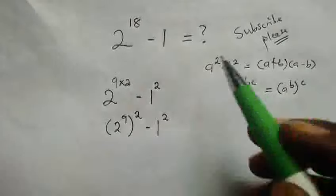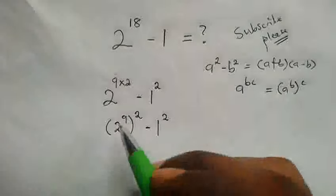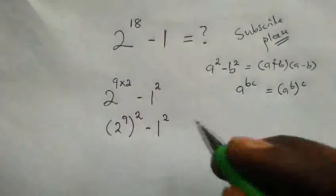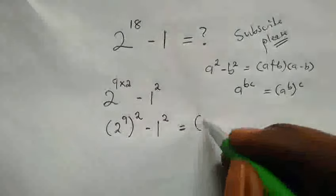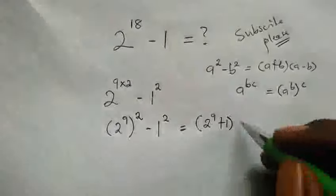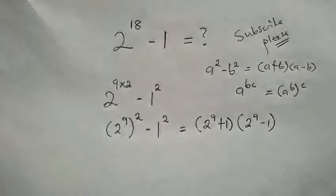Now we can see that the bases here a and b we added and subtracted. The bases here 2 raised by 9 and 1 we are going to add and subtract. So this is equal to 2 raised by 9 plus 1 and again 2 raised by 9 minus 1.